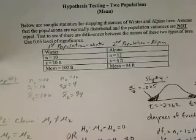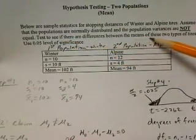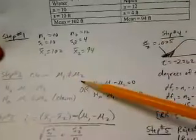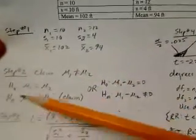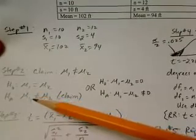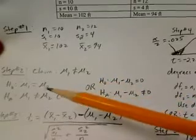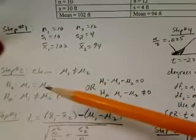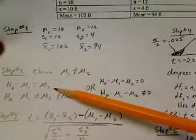In step number two, we're going to identify the claim in symbolic form. We're testing to see if there are differences between the two means of these two types of tires. The claim in mathematical terms is mu1 is not equal to mu2, meaning that they are different. In our alternative hypothesis, we have to put our claim because we don't include the equal sign. The null hypothesis must always contain equals, so mu1 is equal to mu2 in this case.